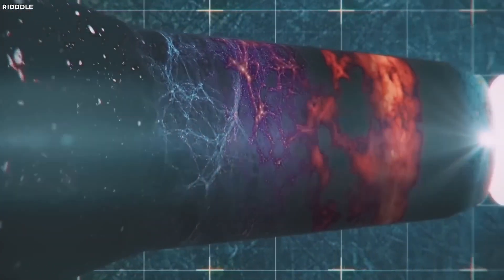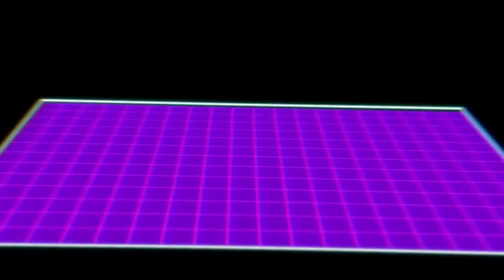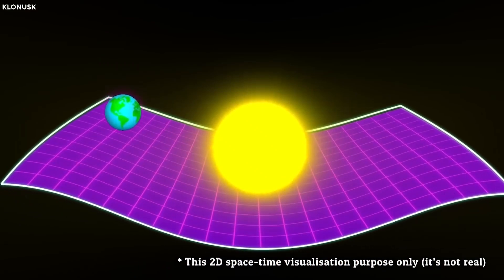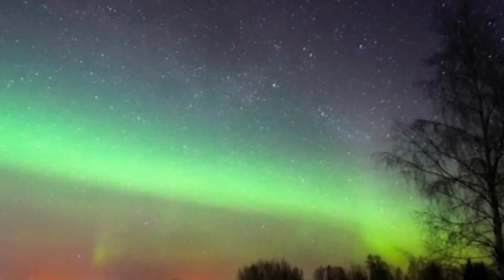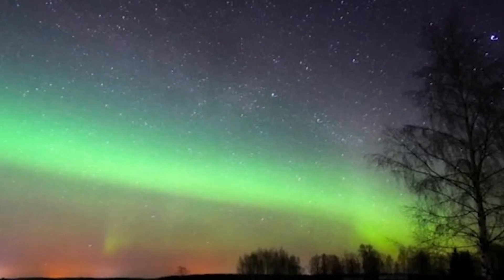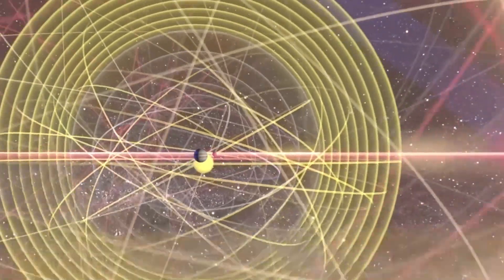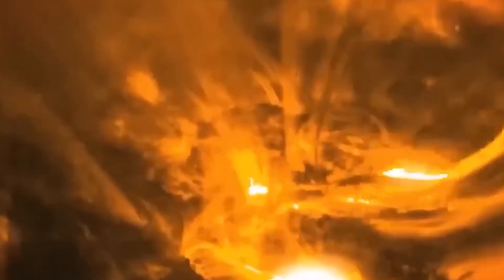As solar winds carry a significant amount of energy, an increased influx could have several impacts. The immediate and most visible effect would be an intensification of auroras, the northern and southern lights, caused by the interaction of solar particles with atmospheric gases.